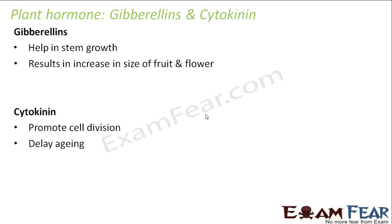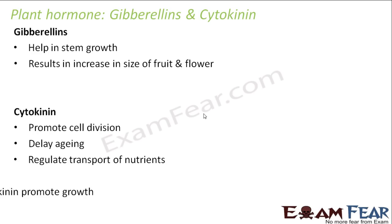Cytokinins also delay aging — due to the presence of this hormone, plants do not die quickly and remain young for a longer time. It also regulates the transport of nutrients, so all parts of the plant get equal amounts of nutrients and stay healthy. So we can say that auxins, gibberellins, and cytokinins are plant hormones that promote growth.